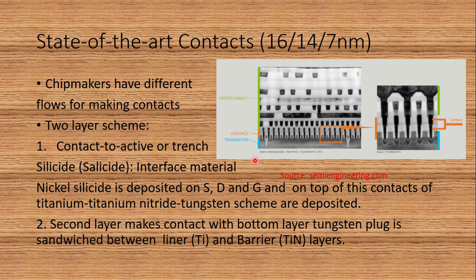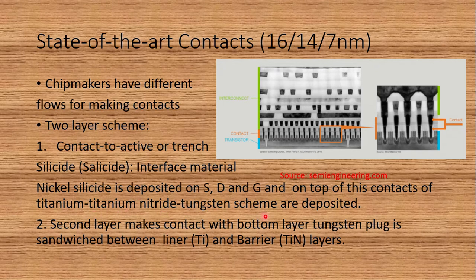At 16, 14, or 7nm technology nodes, different chip makers have different contact formation flows — two-layer schemes and one-layer schemes. In the two-layer scheme, the first layer is contact to active, or trench silicide. Nickel silicide is deposited on the source, drain, and gate. On top of this, contacts of titanium, titanium nitride, and tungsten are deposited. Titanium nitride prevents oxidation of titanium, and a tungsten plug sits on top, sandwiched between a titanium liner and titanium nitride barrier layers.